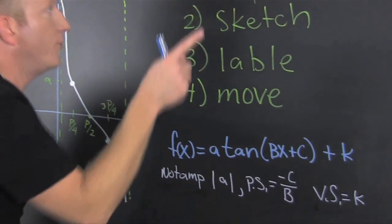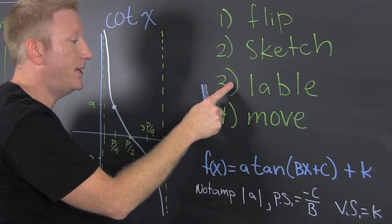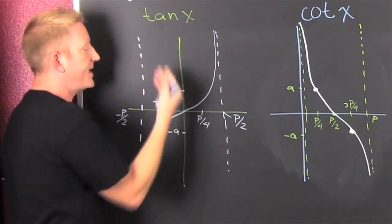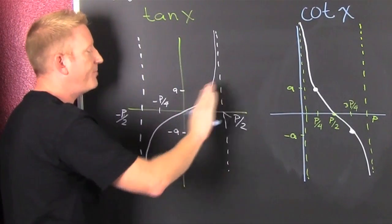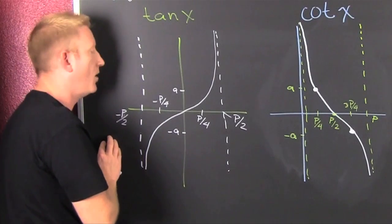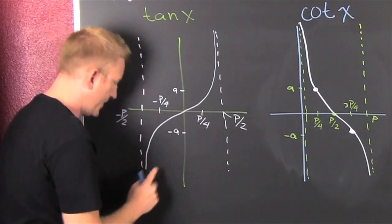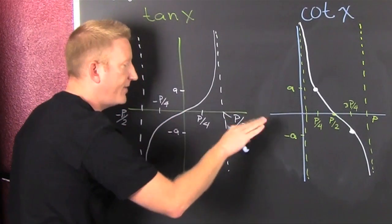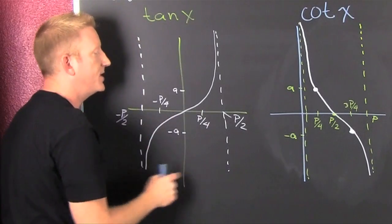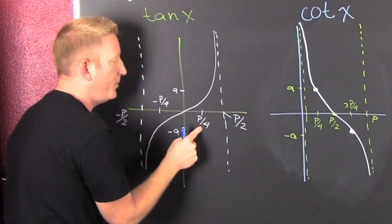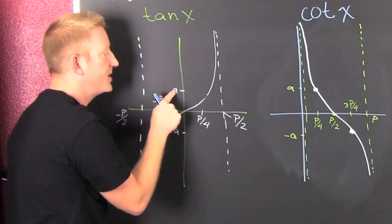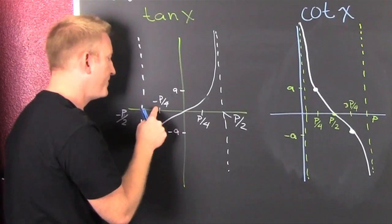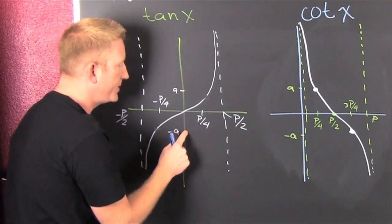When we flip it, sketch it, label it, and move it, we are flipping, sketching, labeling, and moving these guys. My tangent has the basic form where half my period is to the left and half is to the right. The special point at the not-amplitude lies at p over four, and the minus-amplitude lies at minus p over four.